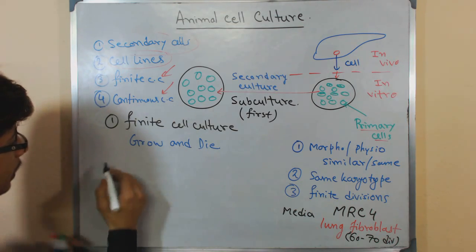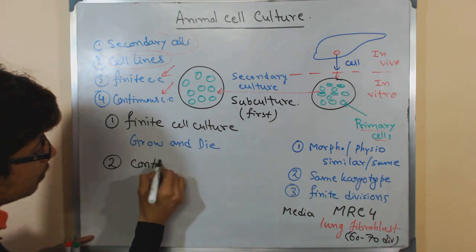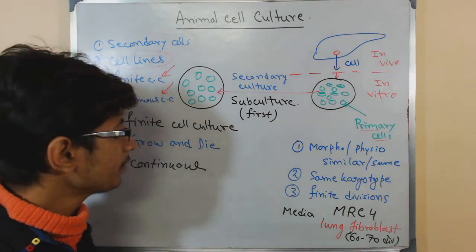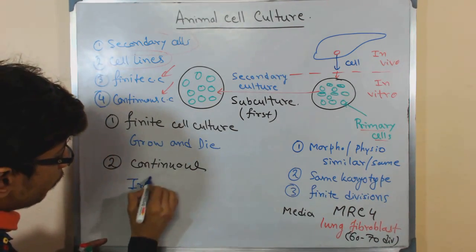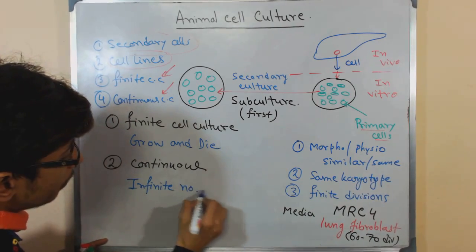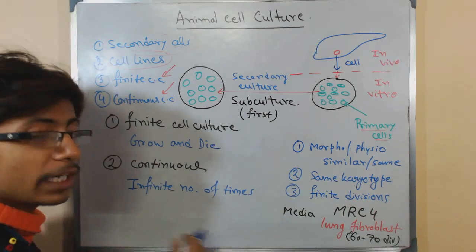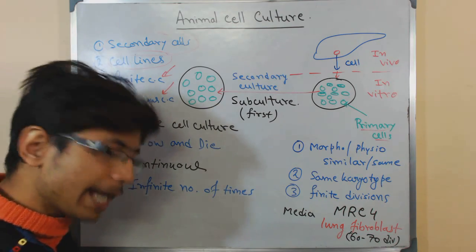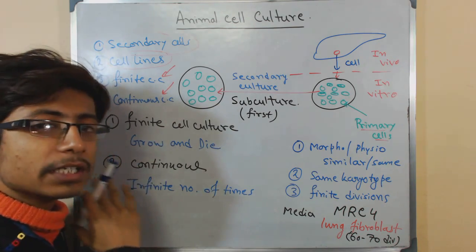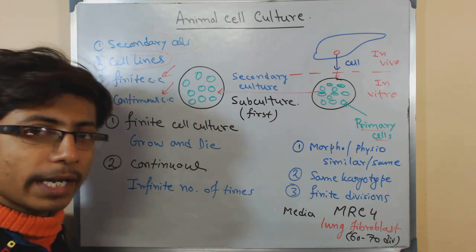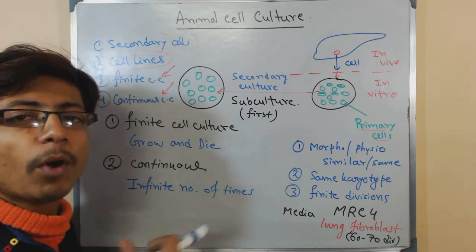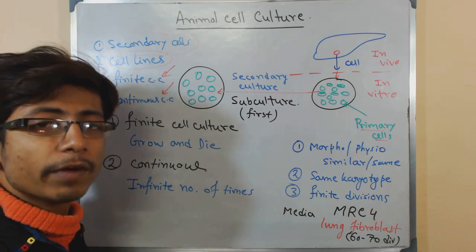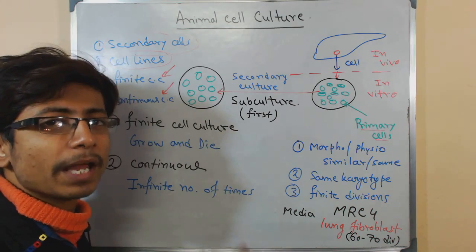On the other hand, continuous culture means that theoretically the cells will grow an infinite number of times, provided we continuously supply the medium — that is, nutrients and other important resources for growth such as oxygen and other nutrient sources. Then they will continuously grow and divide an infinite number of times. Some types like immortal cell culture are also there; theoretically they are immortal, meaning they will continue to grow and divide throughout time if we continuously supply their nutrient source.